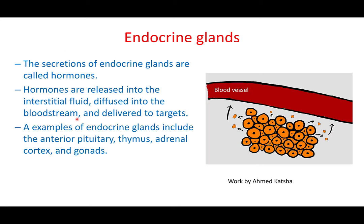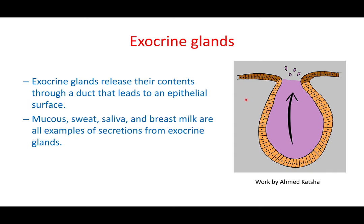We have two types of glands in our body. The endocrine glands are cells that don't have a duct — no tunnel to secrete their secretions through. Their secretions get released into the areas around them and are then transported into the blood. On the other hand, the exocrine glands are glands that do have a duct, where secretions are collected and secreted to a surface.